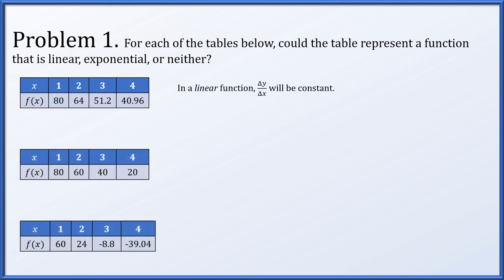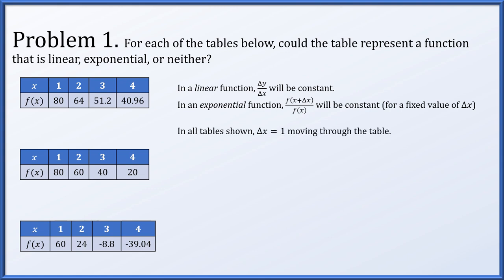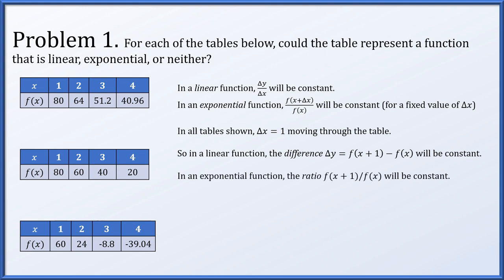For a linear function, there will be a slope — delta y over delta x will be some constant. In contrast, for an exponential function, the ratio f(x + Δx) divided by f(x) will be constant as long as Δx remains fixed. In all of the tables shown, delta x equals 1, going from x equals 1, 2, 3, 4, always increasing by 1. So using delta x equals 1, in a linear function, f(x+1) minus f(x) will be the same constant always, whereas in an exponential function, the ratio f(x+1) divided by f(x) will be constant.